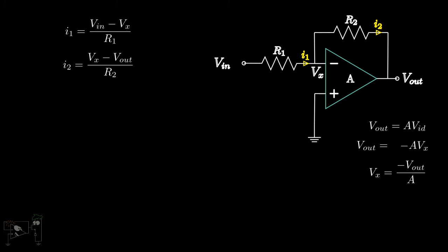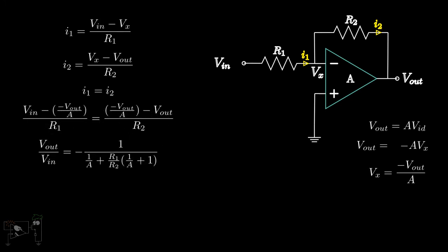When dealing with op-amp non-idealities, we consider one non-ideality at a time. So, for instance in this case the gain of the op-amp is finite, we consider the input resistance of the op-amp to be infinite and output resistance to be 0, just like an ideal op-amp. Hence, the currents in R1 and R2 will be the same, as no current can flow through the inputs of the op-amp. Equating the currents in R1 and R2, and substituting Vx equal to minus Vout by A, we get the following equation. A little simplification gives us this, which is the equation of the gain of an inverting amplifier with finite op-amp gain.